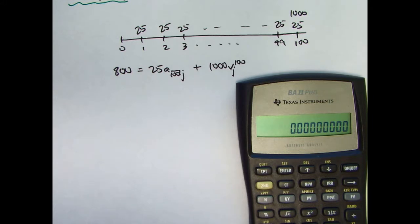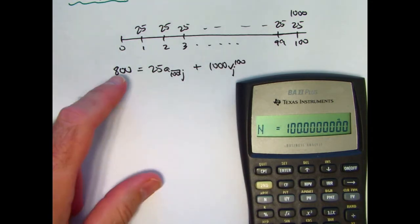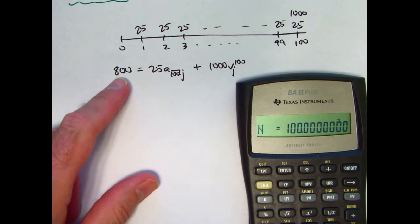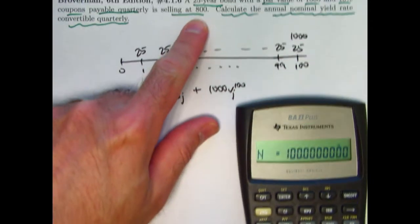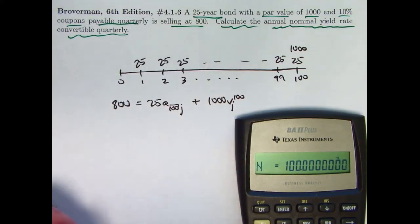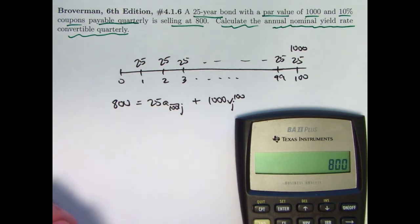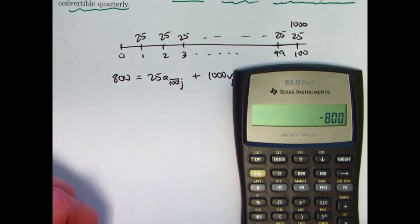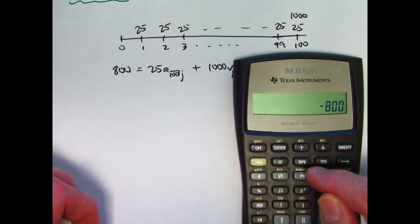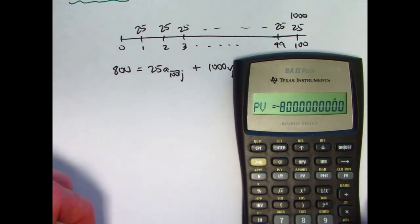You've got 100 payments, so store that in N. You've got a present value that you want to think of as going out—you're paying 800. Think of the present value as being a negative quantity, so put negative 800 in PV because you're paying it out.